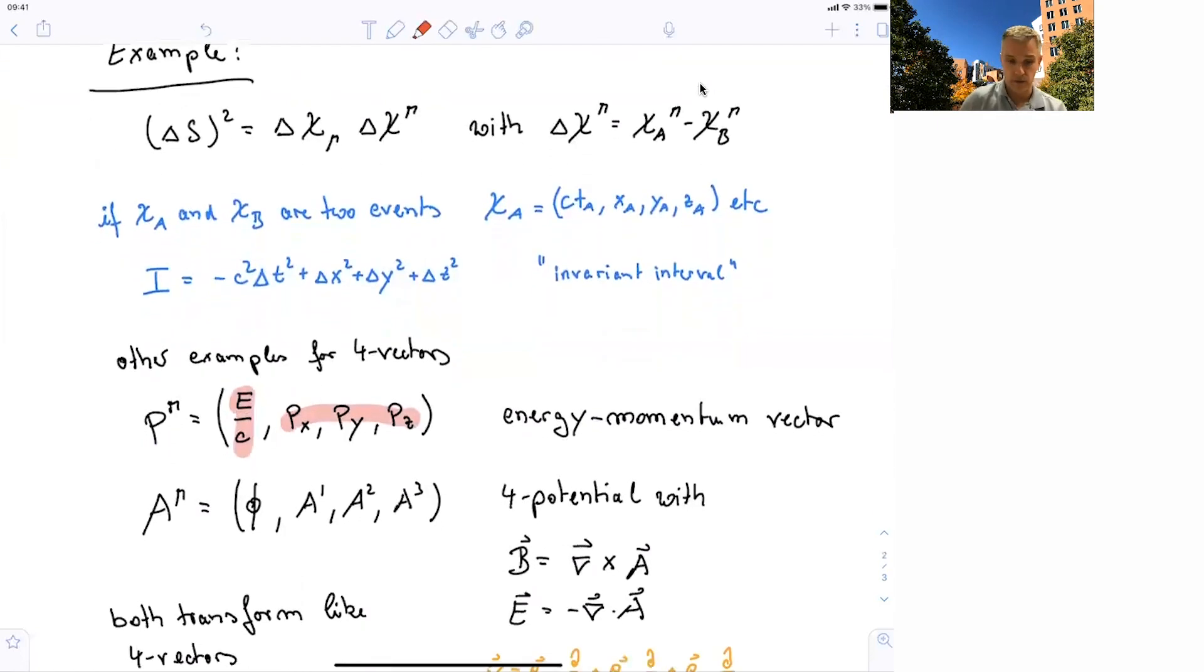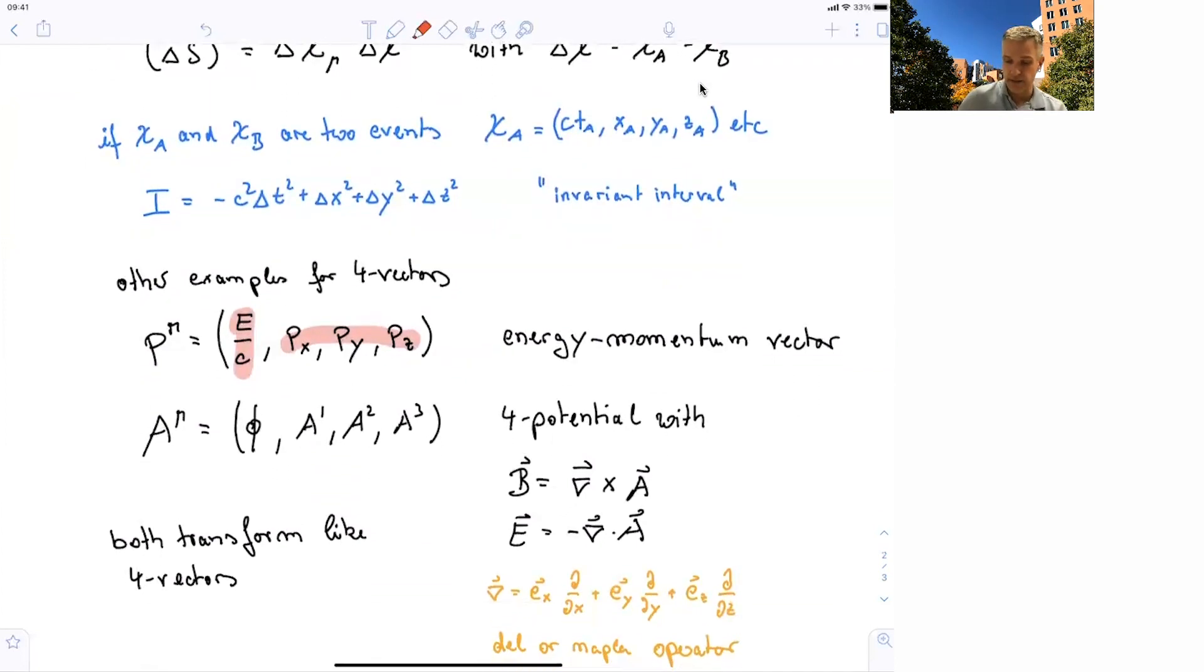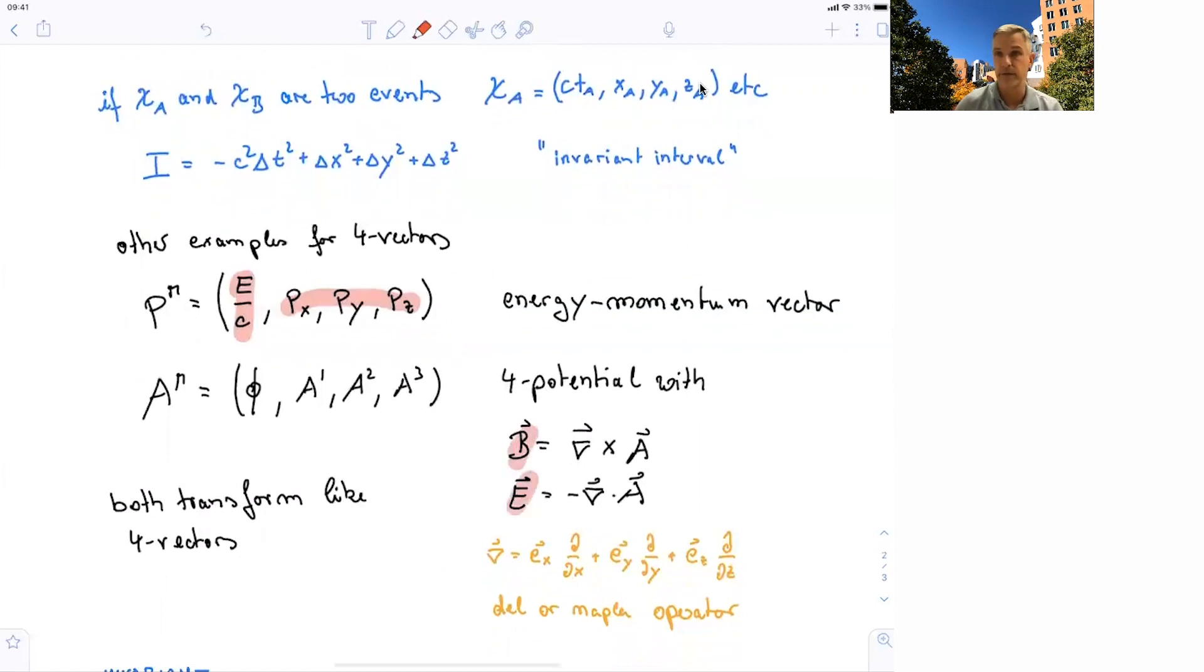But there are others. For example, the four-potential, where in the zeroth component you have the electric potential, and in the first, second, and third components you have this new field A, which is related to the magnetic and electric field. E and M is not part of this course, but we'll come back to this in the last week and discuss the consequences and ideas a little bit more.